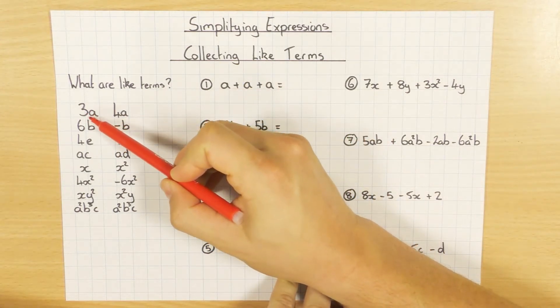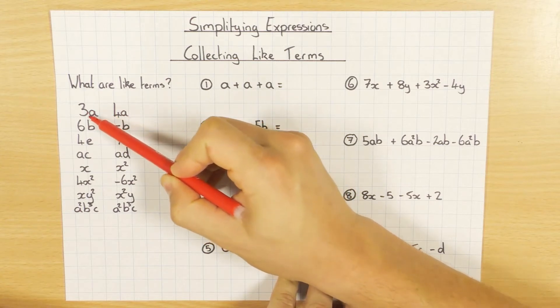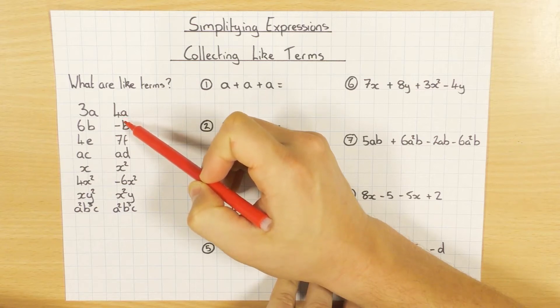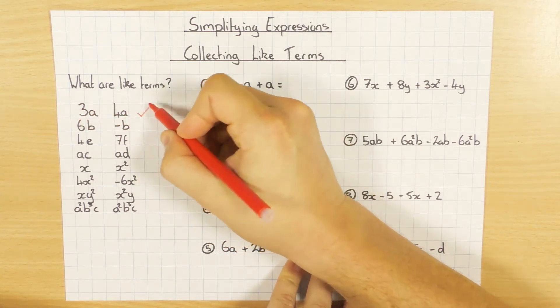So for example, we are only going to be looking at the variables. And when I say variable, I mean the letters. So I'm just looking at the letters here and I'm asking myself, are they exactly the same? Well, I've got an A here and an A here. So 3A and 4A, they are like terms.